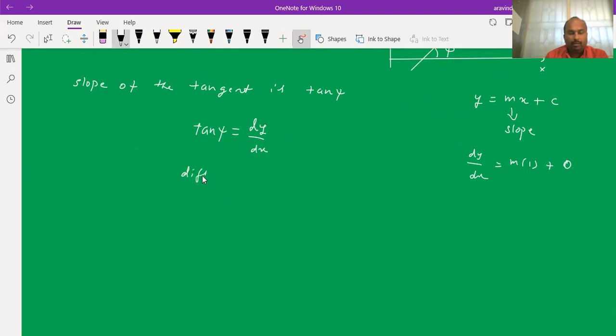Now what I will do, I will differentiate this above equation with respect to s, the arc length. That is d by ds of tan psi equals d by ds of dy by dx. We are differentiating tan psi with respect to s. Most of us have observed y square derivative with respect to x. What we will do, we will write 2y times dy by dx, because we are differentiating with respect to x.